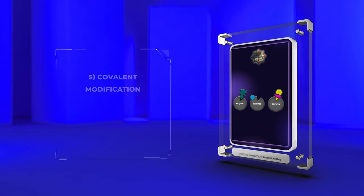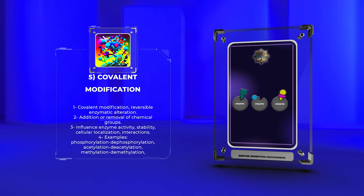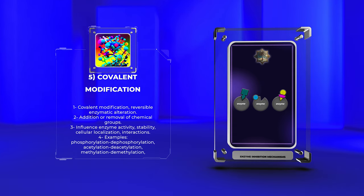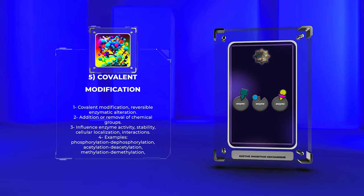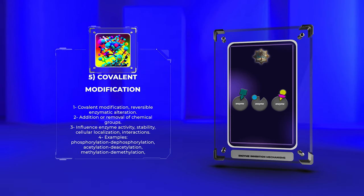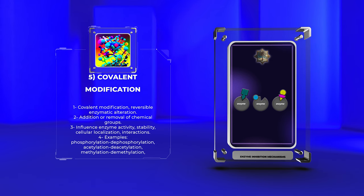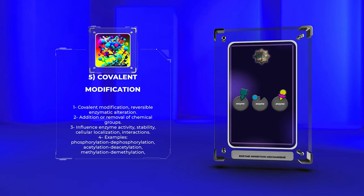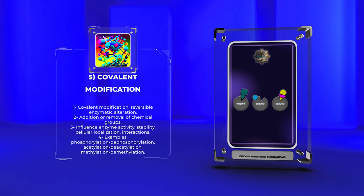Covalent modification involves the reversible and enzymatic alteration of an enzyme's structure and activity through the addition or removal of chemical groups. These modifications can occur via phosphorylation-dephosphorylation cycles, acetylation-deacetylation, methylation-demethylation, and glycosylation-deglycosylation. Such modifications can influence enzyme activity, stability, cellular localization, and interactions with other molecules. Phosphorylation is a widely studied covalent modification, with protein kinases and phosphatases playing crucial roles in signal transduction networks.